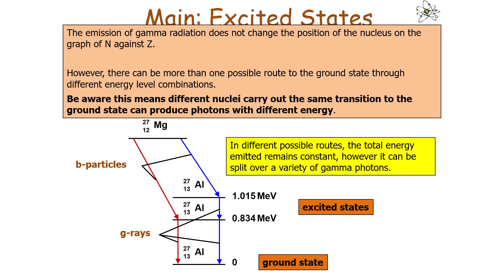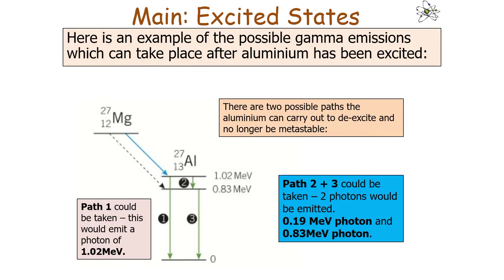Let's look at this example in more detail. Let's look at the possible gamma emissions which can take place after the aluminum has been produced but is still excited. There are two possible paths that the aluminum can carry out to de-excite and no longer be metastable.